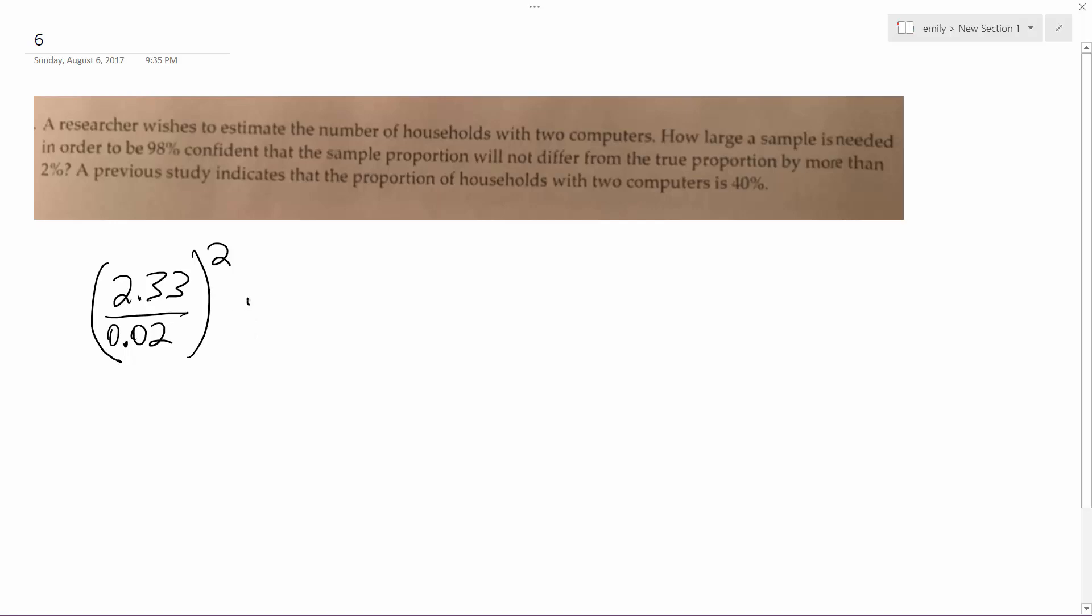With two computers, that's squared, and then times 40, so 0.4, and then one minus p, so that ends up being times 0.6. And what we get when we multiply this is we get out you'd have to have a sample at least